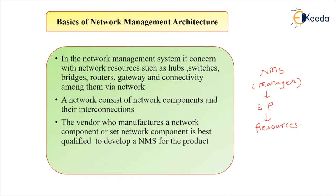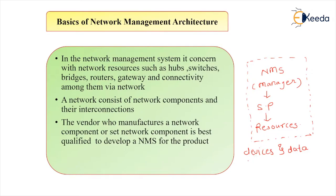NMS is the highest network element present inside the network. Inside a network, two main things are present. One is devices, and the second is data. Devices contain things like connecting devices and present devices used for transmission — for example, computers, laptops, and mobiles. Connecting devices include cables, fiber optical cables, etc.